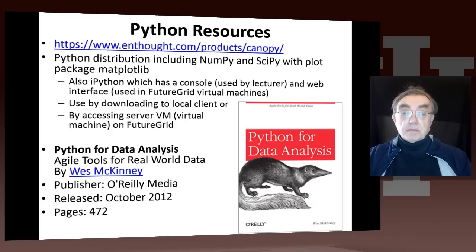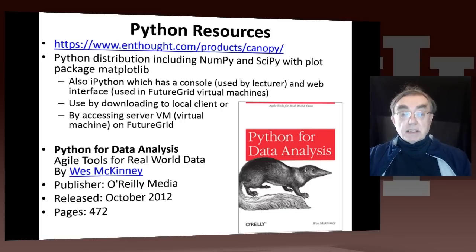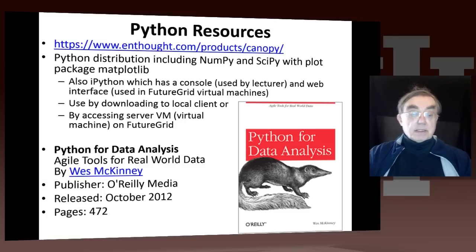You can either download to your local client — here's the Enthought website with the Canopy product — or you can access the same software on a cloud server on the FutureGrid facility. If you want more detail outside the scope of this course, you can read the book Python for Data Analysis. It's probably already out of date — it's from 2012 — but seriously, it's a pretty reasonable book.